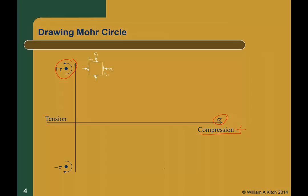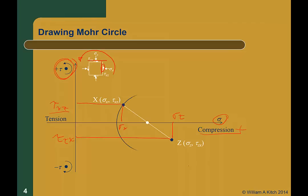First we will use the known state of stress in the x-y coordinate system to draw a Mohr's circle. The process is pretty simple. First we will draw the stresses acting on the x-plane — that will be sigma x and tau xz. You will note that tau xz is positive because this shear stress tends to rotate the element in a counter-clockwise direction, which is what we defined as positive shear stress. Next, we will plot the stresses acting on the z-plane, shown as sigma z and tau zx. Then we will connect these two points with a line, which will be the diameter of the Mohr's circle.